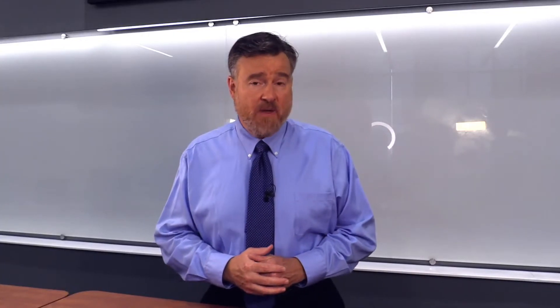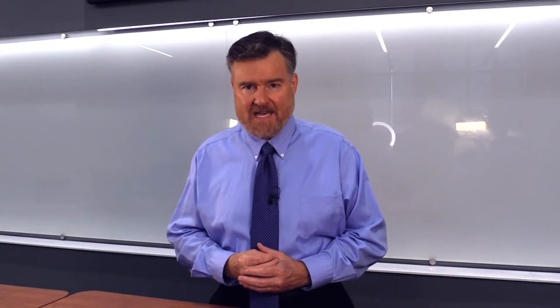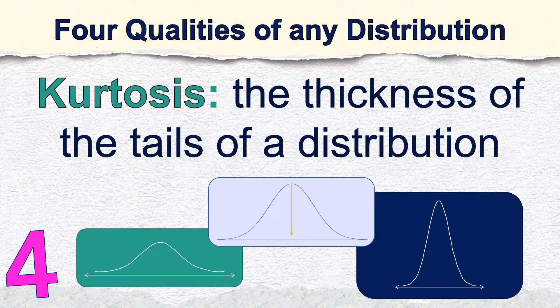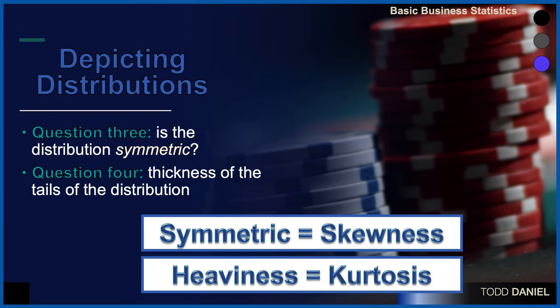The fourth question about our distribution has to do with the heaviness or thickness in the tails, and this is answered with a measure of kurtosis, which measures how heavy the tails are. To review, our four questions are: where is the center of the distribution? How spread out are the scores? Is the distribution symmetric — does it look the same on both sides? And number four, how heavy are the tails? The first two questions — center and spread — are what we'll answer this week, and next week I'll tell you more about skewness and kurtosis.